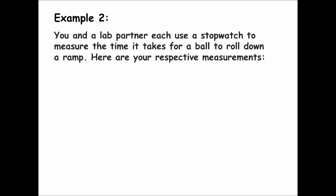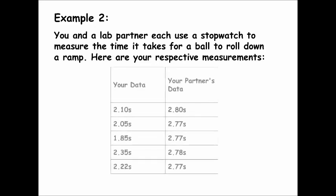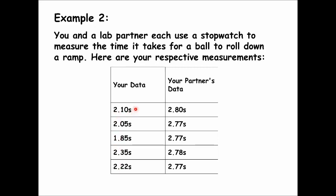Here's another example. Let's say you and a lab partner each use a stopwatch to measure the time it takes for a ball to roll down a ramp. Your measurements were: 2.10, 2.05, 1.85, 2.35, and 2.22 seconds. Your partner's measurements were: 2.80, 2.77, 2.70, 2.78, and 2.77 seconds.